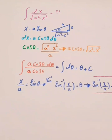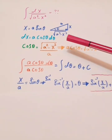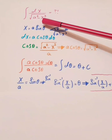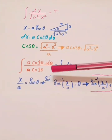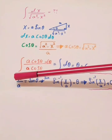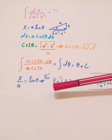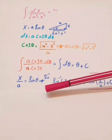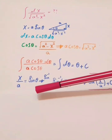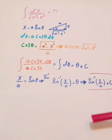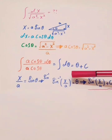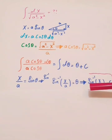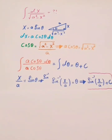Now we need to back-substitute to find θ. We know x/a = sin(θ), so applying the inverse sine to both sides gives sin⁻¹(x/a) = θ. Therefore, the final answer for this integral is sin⁻¹(x/a) + C.